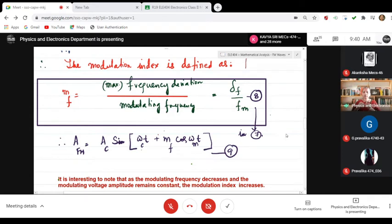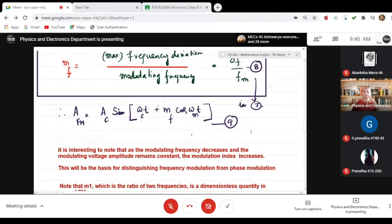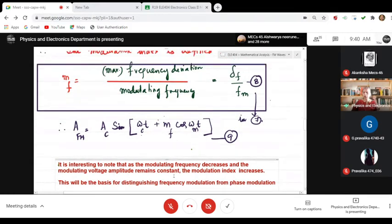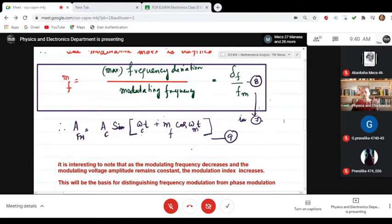Therefore, it is interesting to note that as the modulating frequency decreases, it is in the denominator as you can see. So, as fm decreases and modulating voltage amplitude remains constant because it is not touched, if fm decreases what will happen to modulation index? It increases. This is an important observation.